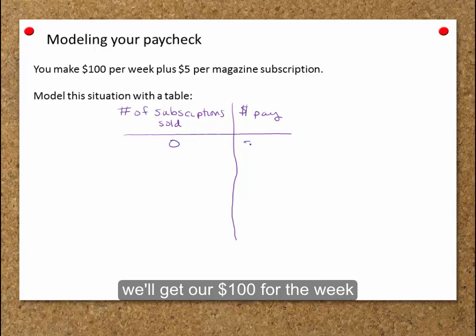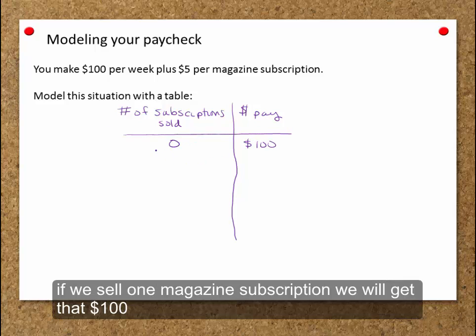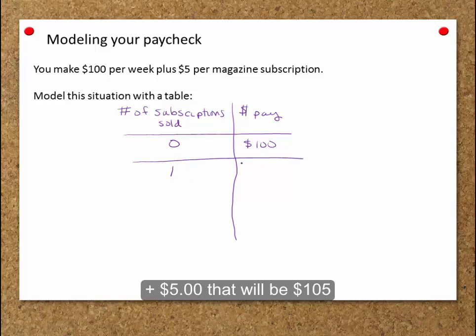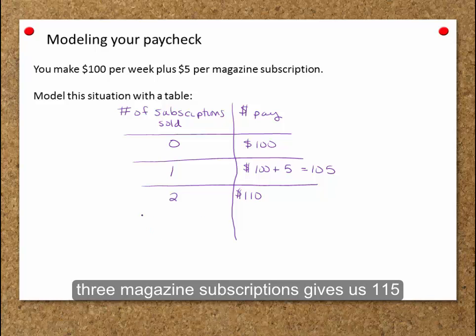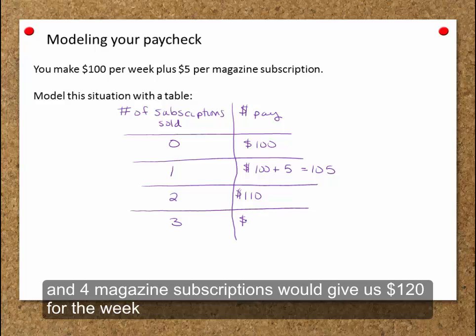If we sell zero, we will get our $100 for the week. If we sell one magazine subscription, we will get that $100 plus our $5, so that will be $105. If we sell two magazine subscriptions, we add another $5 for $110. Three magazine subscriptions gives us $115, and four magazine subscriptions would give us $120 for the week.